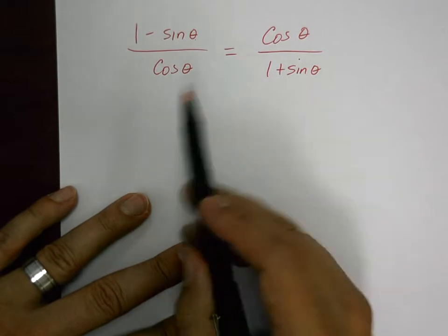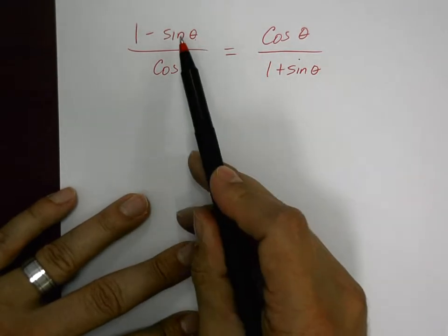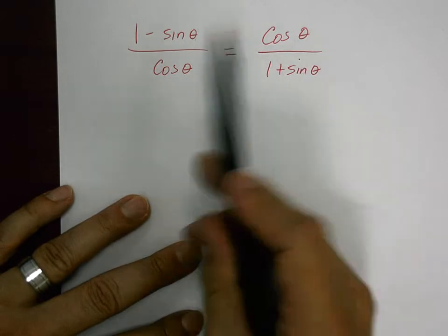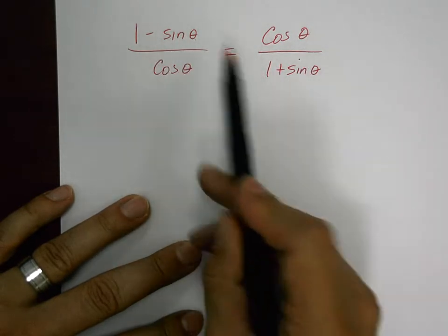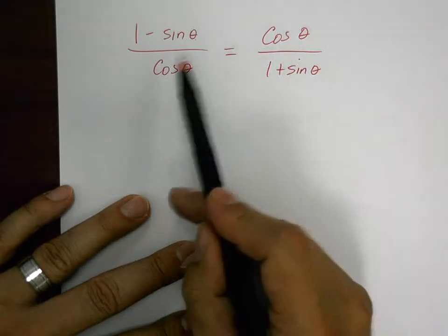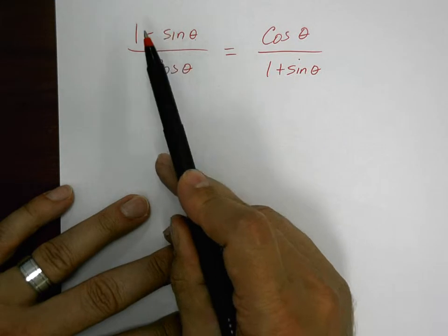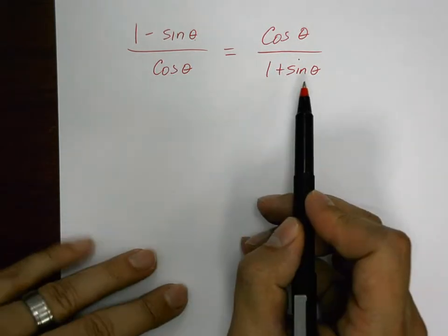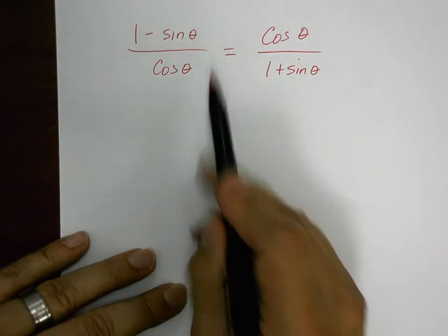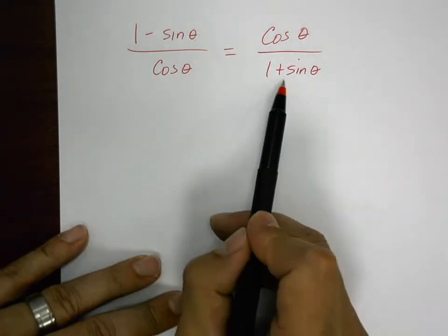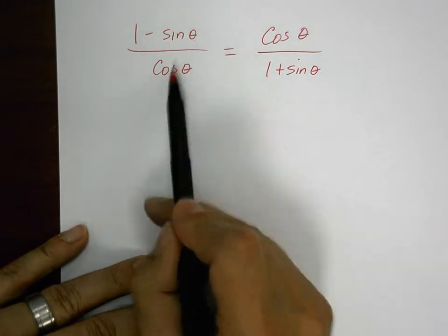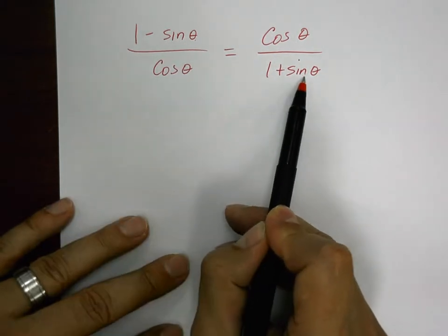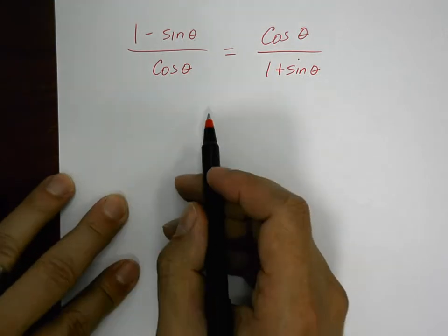There doesn't seem like much you can do with this. You can't easily replace sine or cosine with other forms — the expressions are already in terms of what's on the right side. The only difference is that cosine seems to have switched places, and instead of one minus sine, it says one plus sine of theta. This is another common technique with identities — you're noticing that the statement is basically the same except one says one minus something and the other says one plus the same thing. This technique is called multiplying by the conjugate.